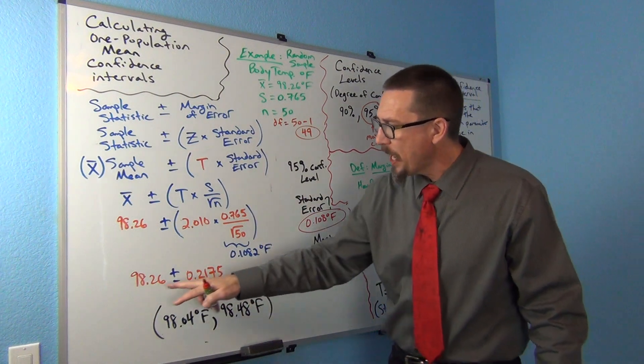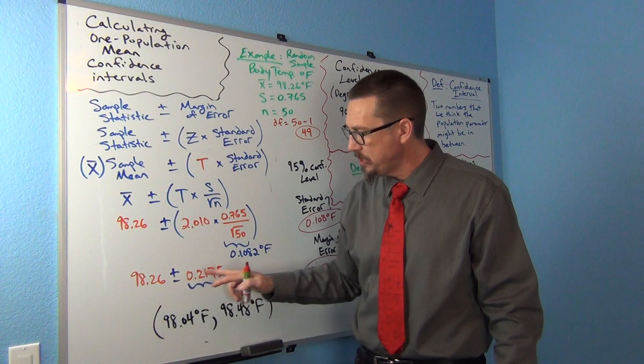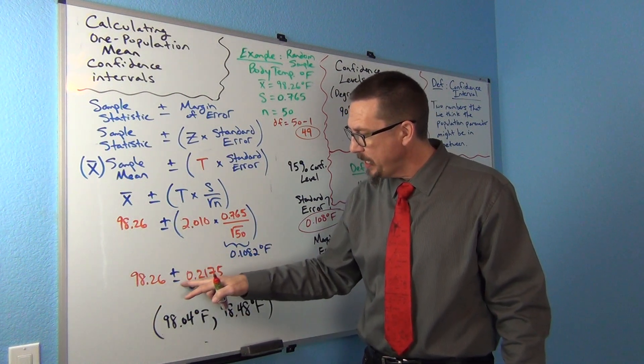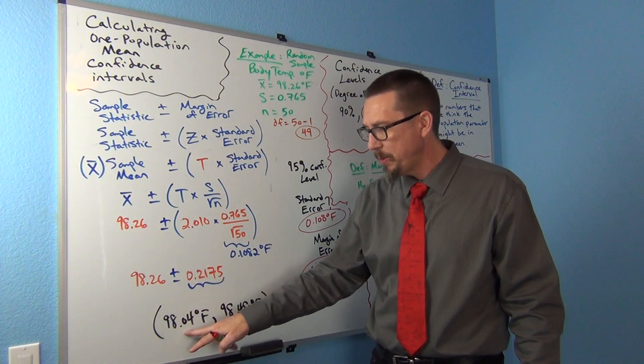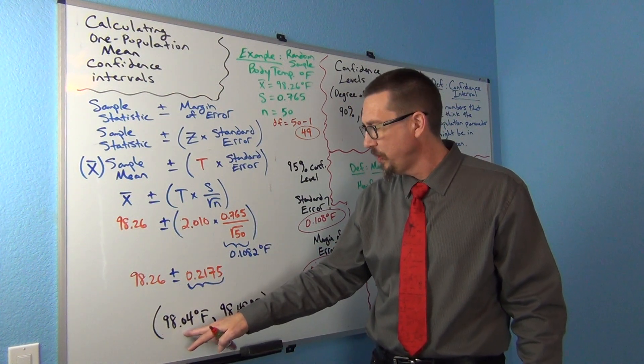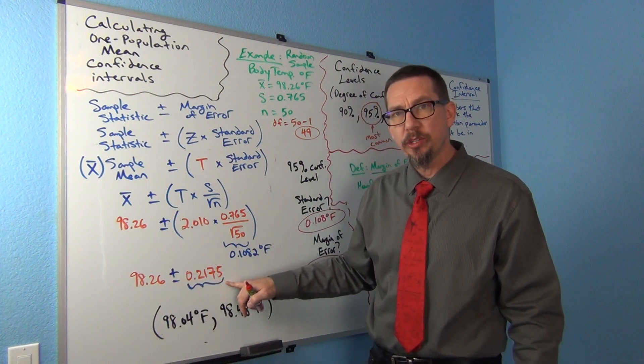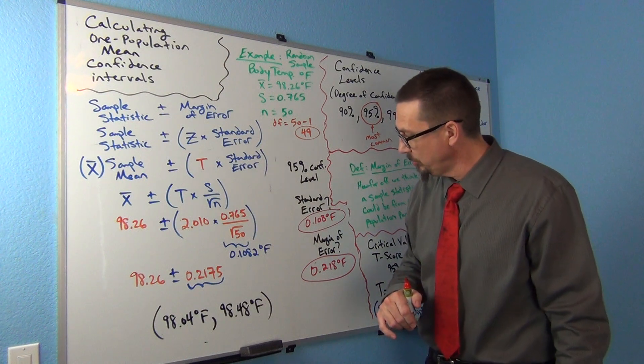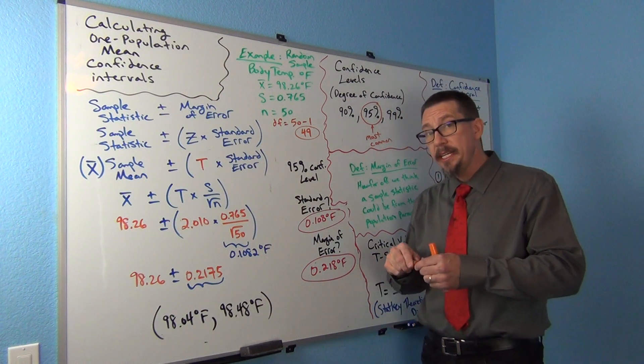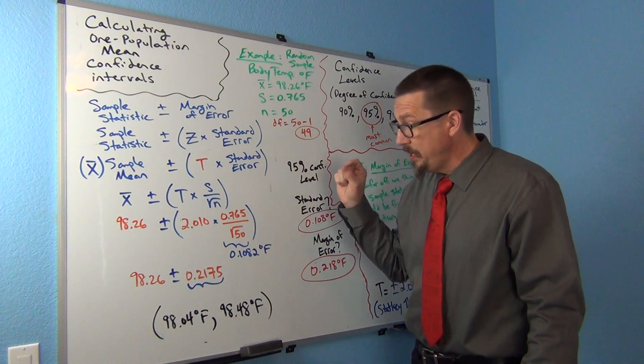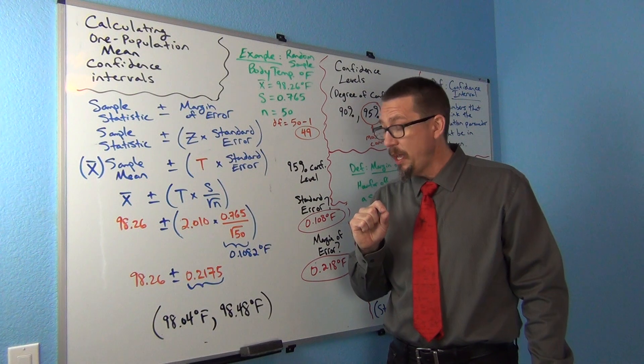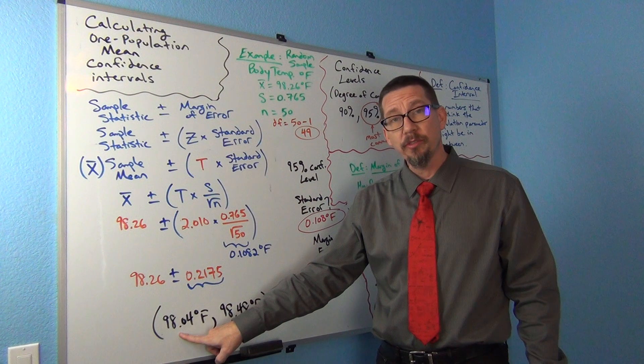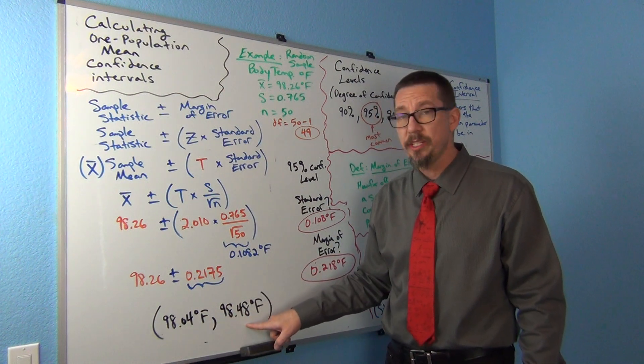Now I'm just going to add and subtract. Once you have your sample statistic and your margin of error, you just have to add and subtract them. 98.26 minus 0.2175 comes out to about 98.04 degrees Fahrenheit. 98.26 plus 0.2175, we get 98.48 degrees Fahrenheit. So we are 95% confident that the population mean average body temperature is somewhere between 98.04 degrees Fahrenheit and 98.48 degrees Fahrenheit.